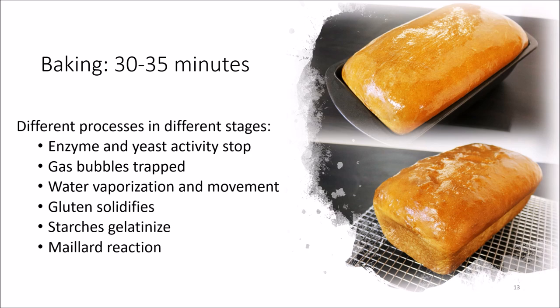It may seem like we reached the baking stage quickly, but there's actually a lot going on during baking. The loaf on the right has been fully baked and brushed with butter — nicely risen and beautifully structured. During baking we have: a temperature at which yeast activity stops, gas bubbles trapped in the gluten and starch structure, water vaporizing and moving through the bread, gluten solidifying, starch gelatinization, retrogradation, and the Maillard reaction. I'll go through each of these individually in the following slides.